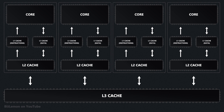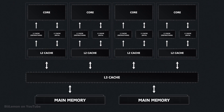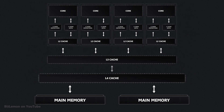L3 is larger but slower than L2. It serves two main purposes: it allows data sharing between processor cores without accessing main memory, and it provides an additional layer in the memory hierarchy. When both L1 and L2 caches miss, the L3 cache is checked before resorting to main memory. Some specialized systems add an L4 cache on top of the usual L1, L2, and L3 caches to boost performance even more.